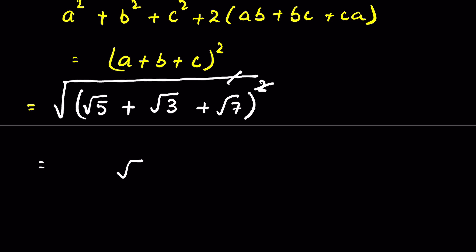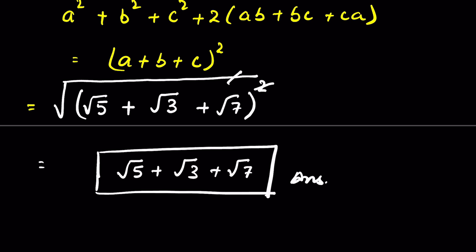Now we can cancel the square root with the square, so the answer is √5 + √3 + √7. Like and subscribe, thanks for watching.